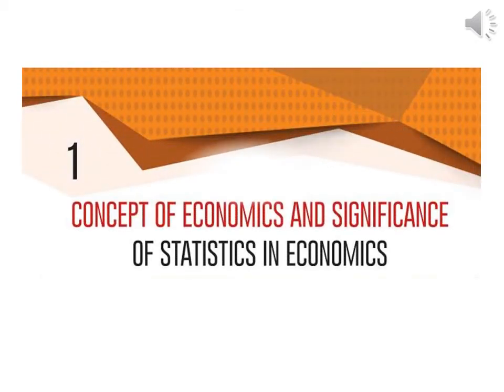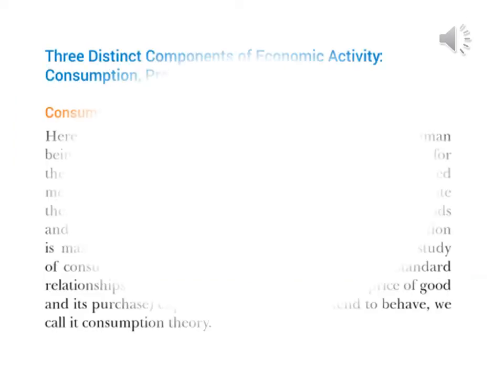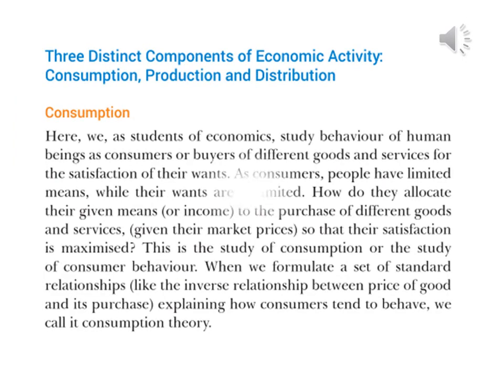Good morning students. Today we are going to do part 2 of our first chapter — three distinct components of economic activity. There are three components: first is consumption, second is production, and third is distribution.